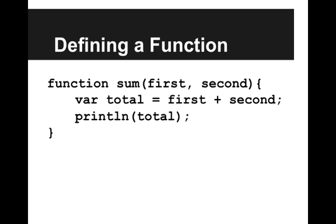Now we'll define this function sum. We write function sum, and then open parentheses, and then the names of our parameters, first comma second. Then we write that our total is equal to first plus second, and we print it out.